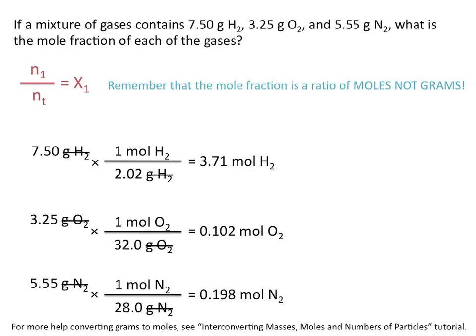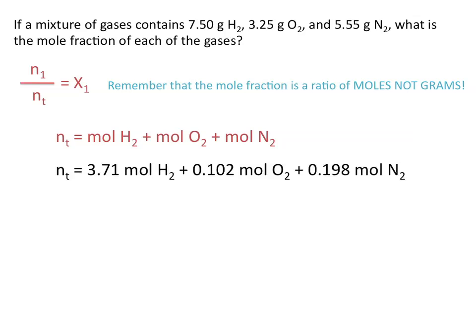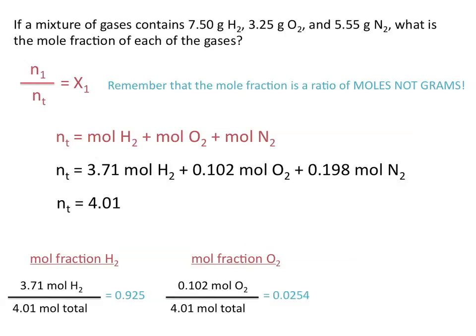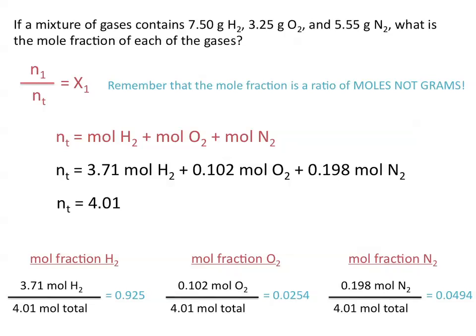Now we've calculated the moles of each of the individual gases. To calculate the total number of moles, we add these numbers together, so N sub T is equal to 4.01. Now to calculate the mole fractions, we take the moles of each individual gas divided by the total number of moles. The mole fraction of H2 is 0.925, the mole fraction of O2 is 0.0254, and the mole fraction of N2 is 0.0494.